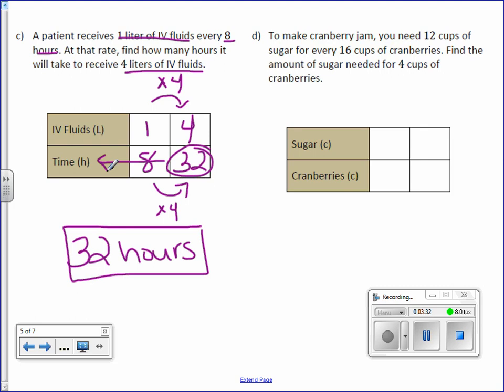Letter D. To make cranberry jam, you need 12 cups of sugar for every 16 cups of cranberries. Find the amount of sugar needed for 4 cups of cranberries. So 12 cups of sugar, 16 cups of cranberries, and we want to find for 4 cups of cranberries.